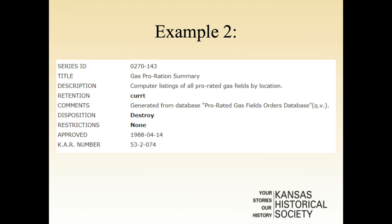Here is our second example — gas proration summary. The retention period here is listed as CURT, which I assume means current, but that still doesn't make any sense. How long are these summaries current? Are they current for 10 days or 50 years? You really have no way of knowing. I have no idea how this was ever approved — apparently records management standards were a lot looser back in the 80s.